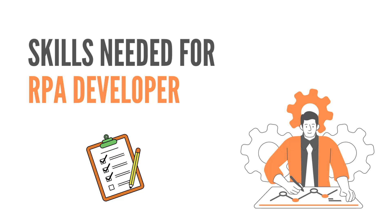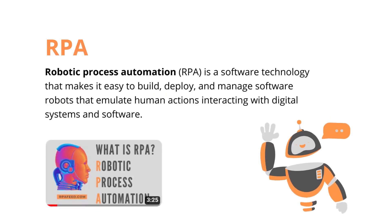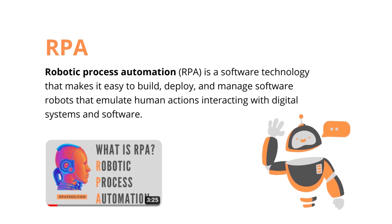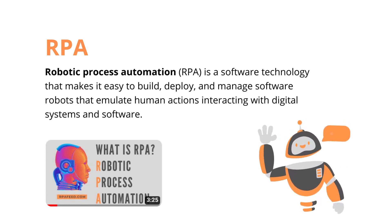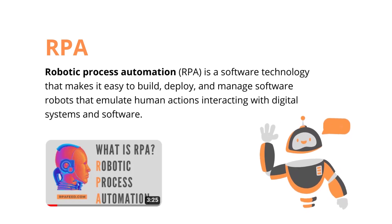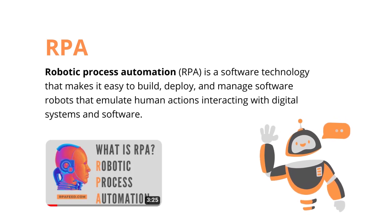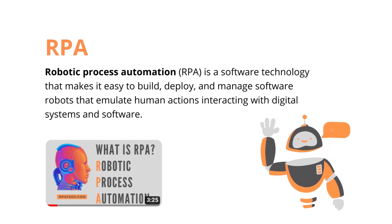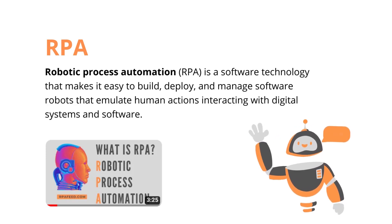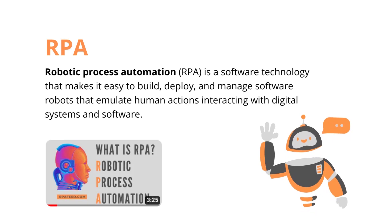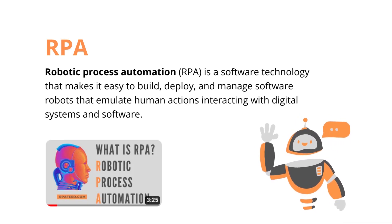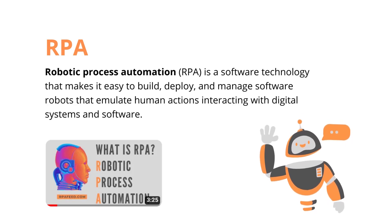Before that, let's try to understand what RPA is for new viewers. RPA is a software technology that makes it easy to build, deploy, and manage software robots. Robotic Process Automation is the use of software robots to automate repetitive tasks and streamline business processes. The bots are capable of mimicking human actions on a computer system and automate rule-based tasks. It's a software — not a physical robot. I have a dedicated three-minute video on this if you want more details.